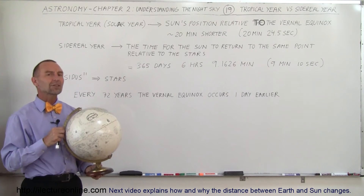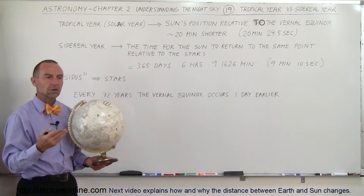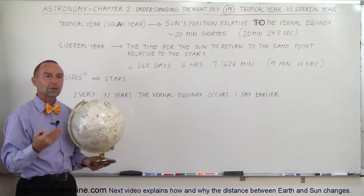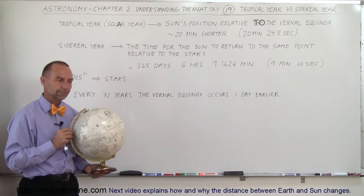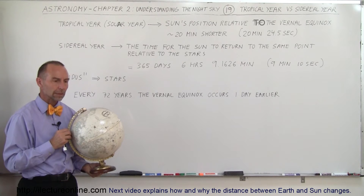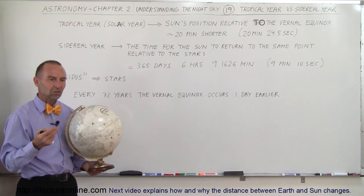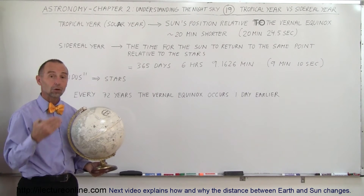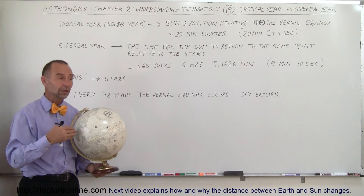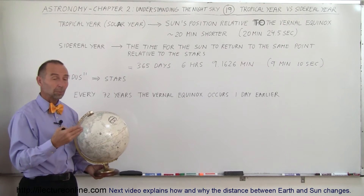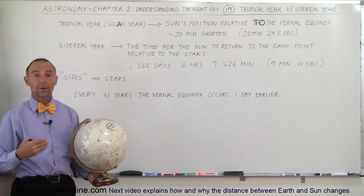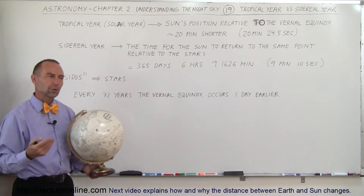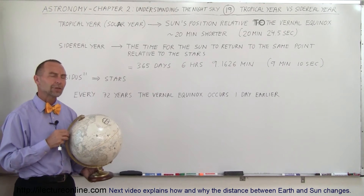The effect of that would be that every 72 years, the summer and the winter would happen one day sooner. Eventually, if enough time goes by, what would happen is that in the Northern Hemisphere, the summer would be in January and the winter would be in July — and that, of course, would not be a good thing.